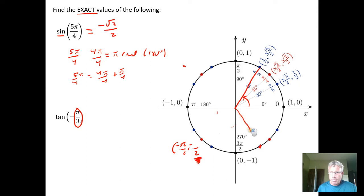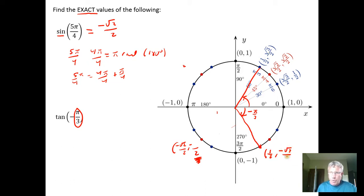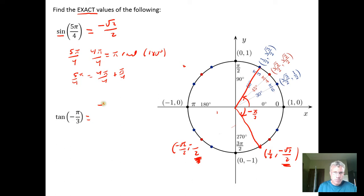Now I have a negative π/3 rotation into quadrant 4. Using the special angles from quadrant 1 and reflecting down into quadrant 4 makes the y-coordinate negative. The tangent function is the y-coordinate divided by the x-coordinate. The denominators divide to give 1, so we get numerator over numerator, which is just negative square root of 3.